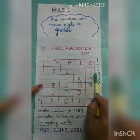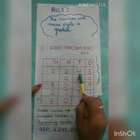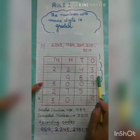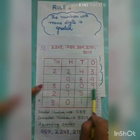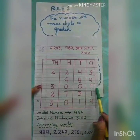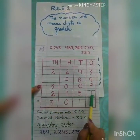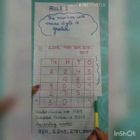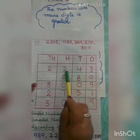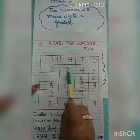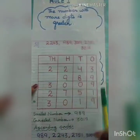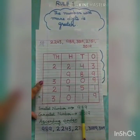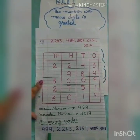This number has 4 digits. Another number has 3 digits, and the remaining numbers also have 4 digits. That means the number with 3 digits is the smallest one. We get our smallest number — that is 989.